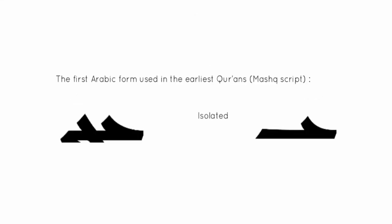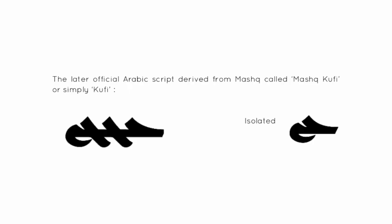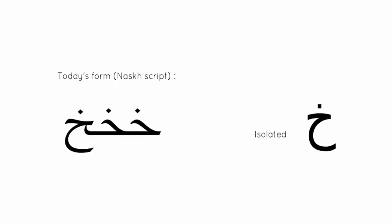The original pictogram. The first Arabic form used in the earliest Qur'ans: Mashq script. The later official Arabic script derived from Mashq, called Mashq Kufi or simply Kufi. Today's form: Naskh script.